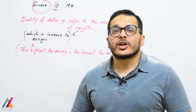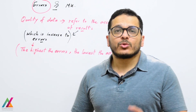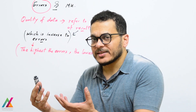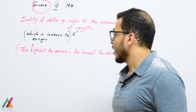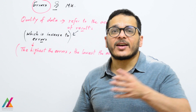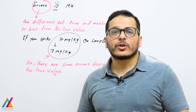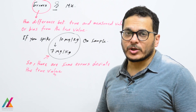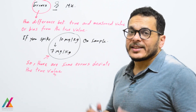You should know the difference between errors and measurement uncertainty, but first you should know what errors are. Quality of data refers to the accuracy of results — highly accurate results mean high quality data. Accuracy is inverse to errors: the higher the errors, the lower the accuracy. Errors are the difference between true and measured value, or bias from the true value. For example, if you spike a sample with 10 micrograms per kilogram and get a result of 7 micrograms per kilogram, there are errors deviating from the true value.